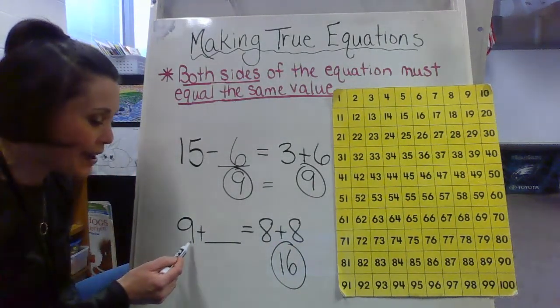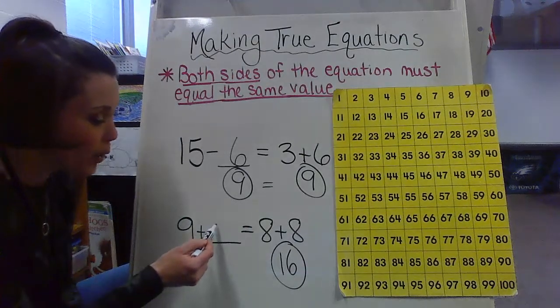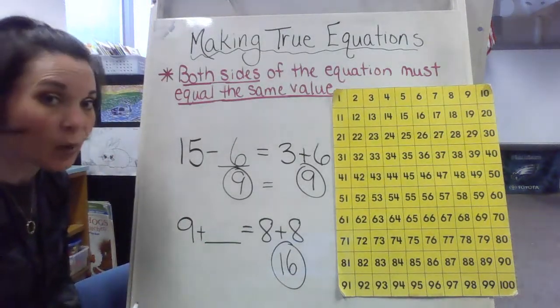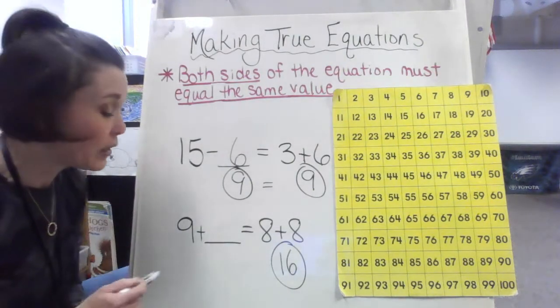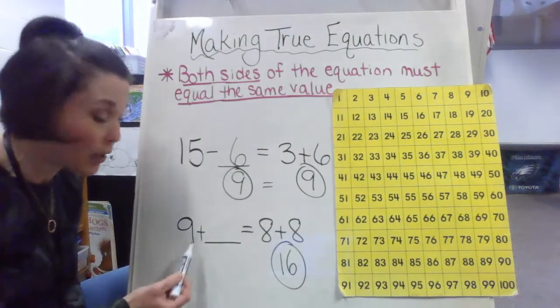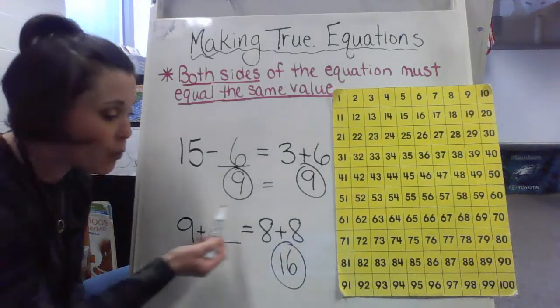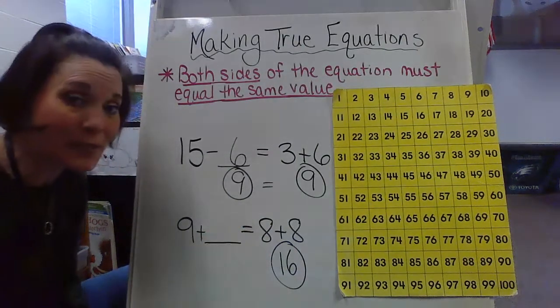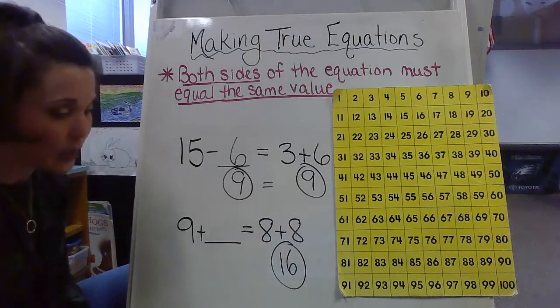Now 9 plus what number is going to give me 16? So here we go again. If you want to do a count on method, you want to start with my lower number, which is here, which is 9. I want to count on to 16. Therefore that's what's going to give me my missing number. So here we go again.